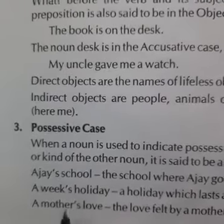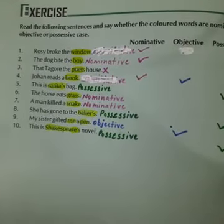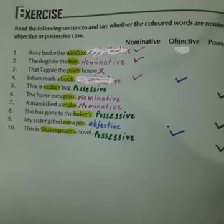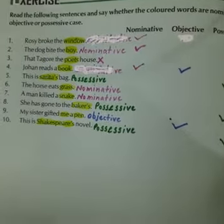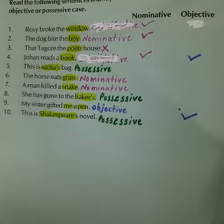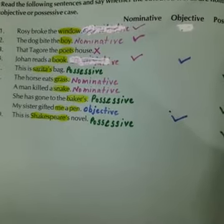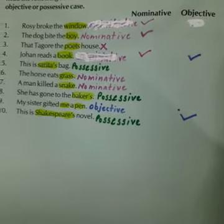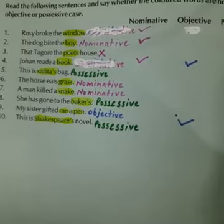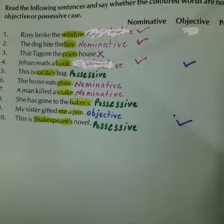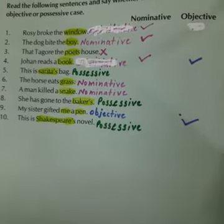Now we have a short exercise. We need to read sentences and say whether the colored words are nominative, objective, or possessive cases. First sentence: 'Rosie broke the window.' We ask 'Who broke the window?' — Rosie. Rosie is the subject, hence it is a nominative case.